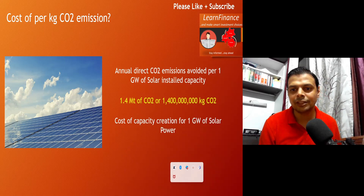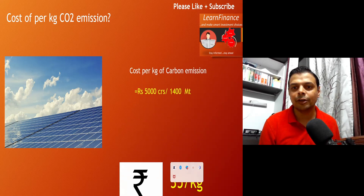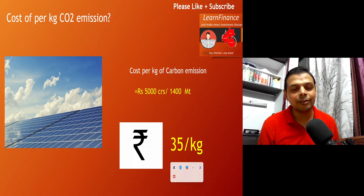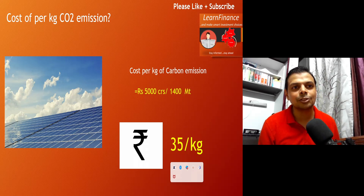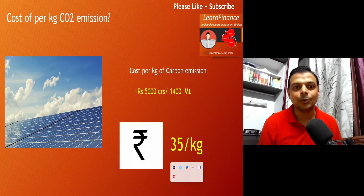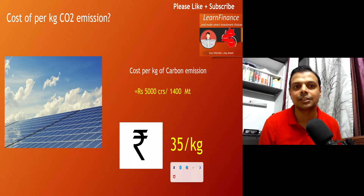We have to invest almost 5,000 crores. So if you do the math, for every 1 kg of CO2 emission elimination through solar power, we will have to invest 35 rupees to build capacity. That becomes the cost of per kg carbon emission today. If you emit 1 kg of CO2, to eliminate that, there has to be an investment of 35 rupees.